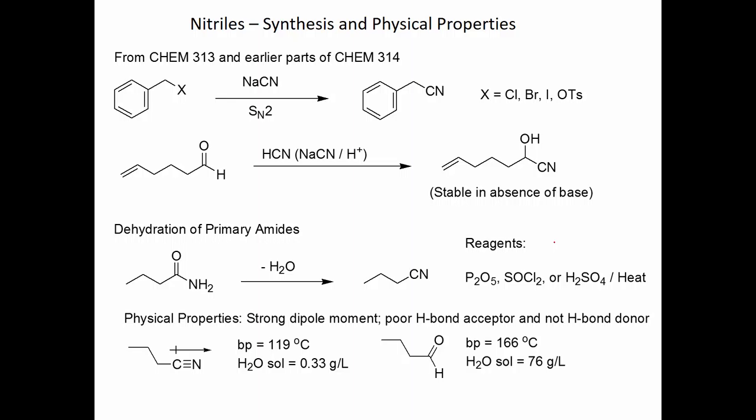We're going to look at the properties and reactions of nitriles. We've had most of the reactions for nitriles before. In Chapter 8, we looked at the SN2 reaction - how if you had an alkyl halide or a tosylate suitable for the SN2 reaction, it would react with sodium cyanide to convert it to the nitrile. The only limitation on that reaction is the limitations of the SN2 reaction. If it's not a good SN2 substrate, the reaction won't occur.